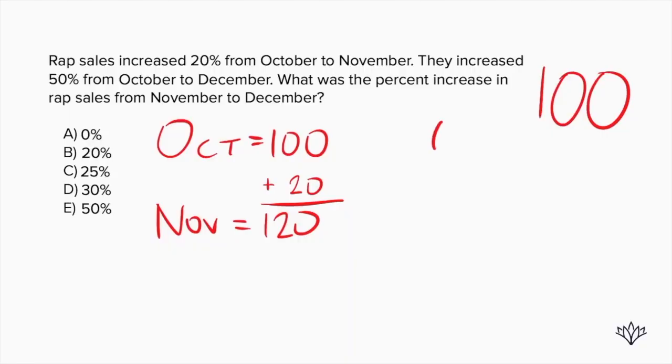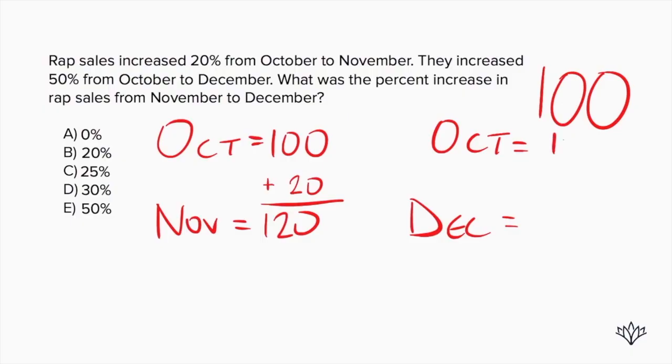Now let's read the next part carefully. They increased 50% from October to December. We're starting again from October and then going to December — an increase of 50%. We're starting with 100. What's 50% of 100? It's just 50. So 100 plus 50 is 150 for December.